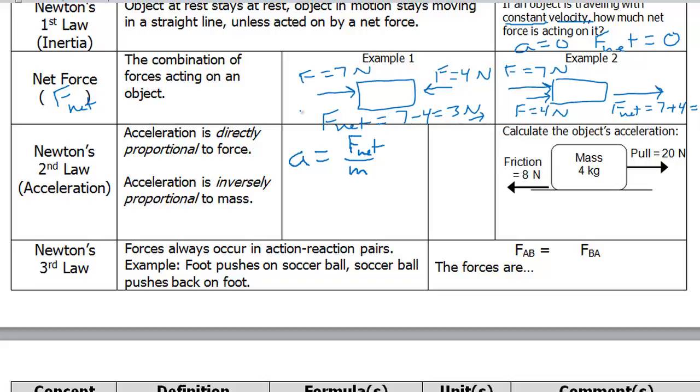We can also write this equation a different way. By multiplying both sides by mass, we get F net equals mass times acceleration. And there's a third way we can write this equation, mass equals F net divided by acceleration.